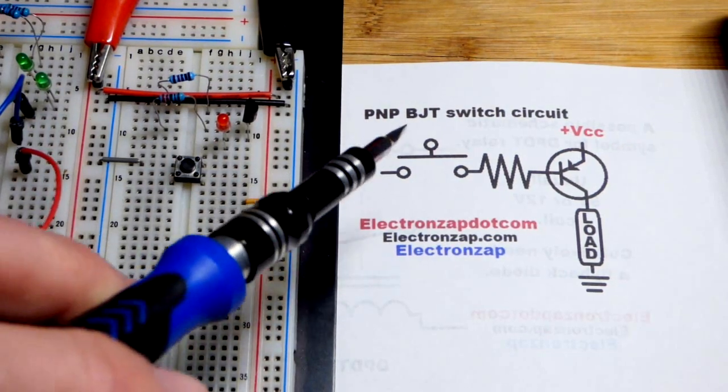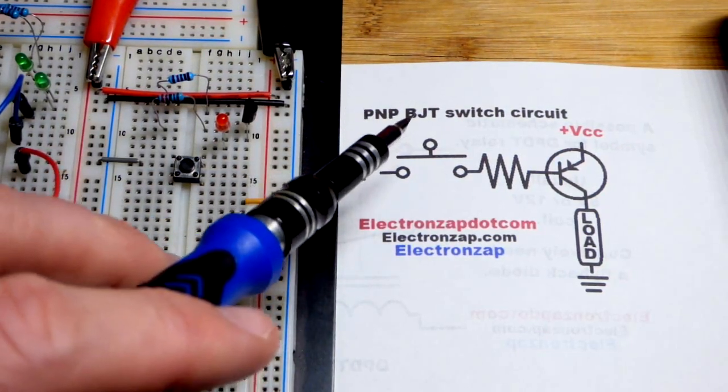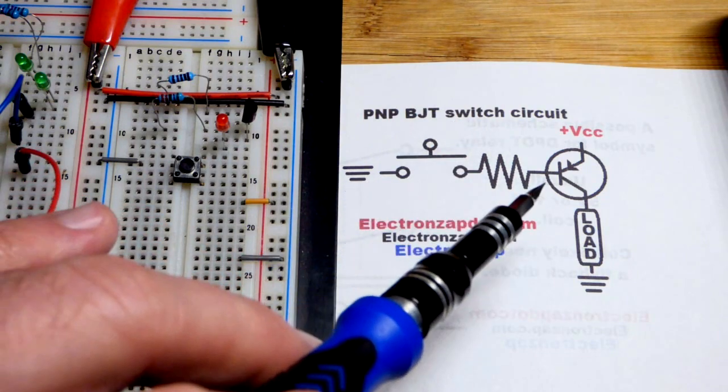So now in this video, we're going to look at using a PNP bipolar junction transistor as a switch.